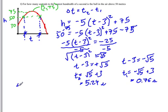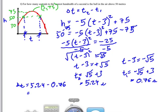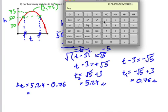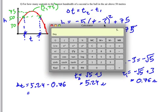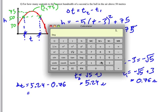The time that the ball is in the air is going to be the difference between 5.24 and 0.76 seconds. So 5.24 minus 0.76. And that comes out to be approximately 4.48.